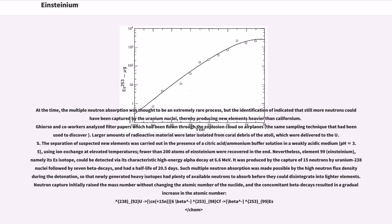Neutron capture initially raised the mass number without changing the atomic number of the nuclide, and the concomitant beta decays resulted in a gradual increase in the atomic number: 238-92 U plus 15 neutrons and 6 beta decays yields 253-98 Cf, which beta decays to 253-99 Es.